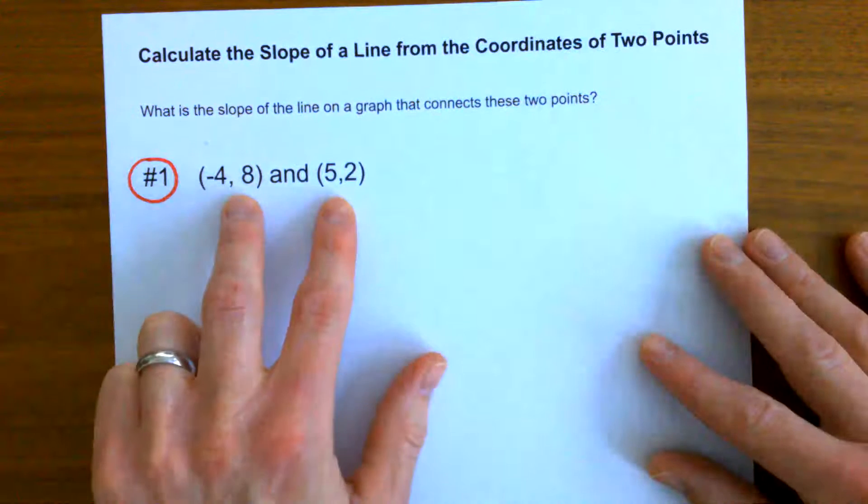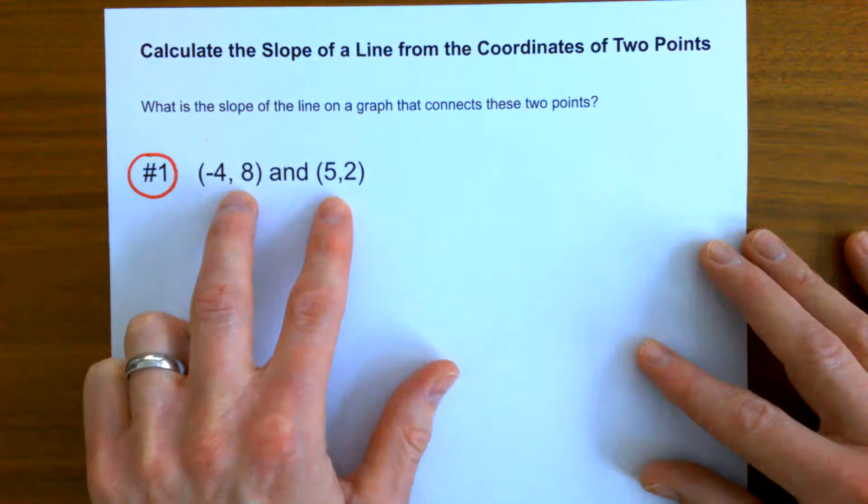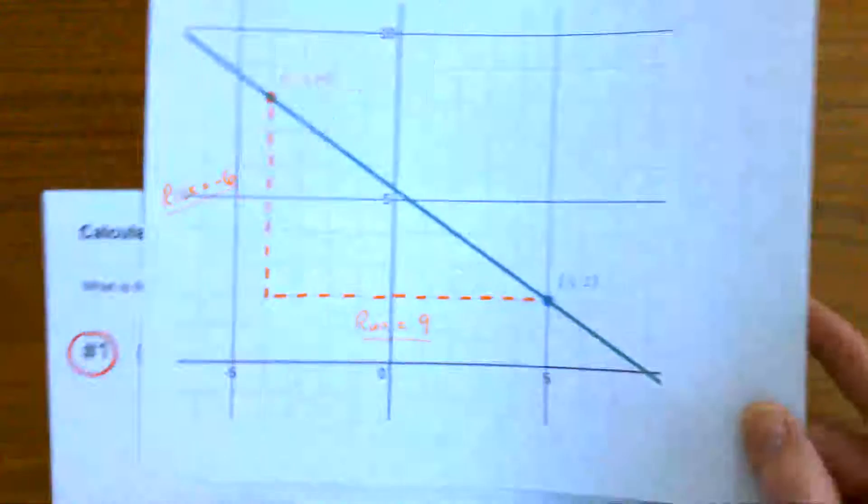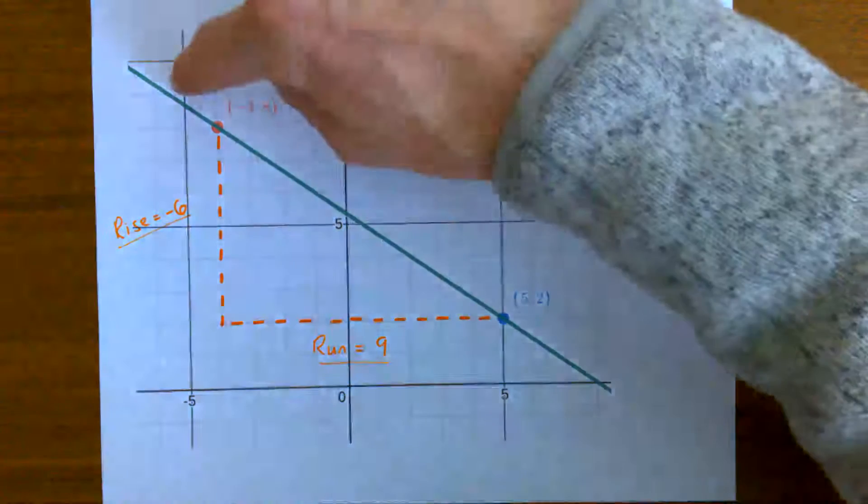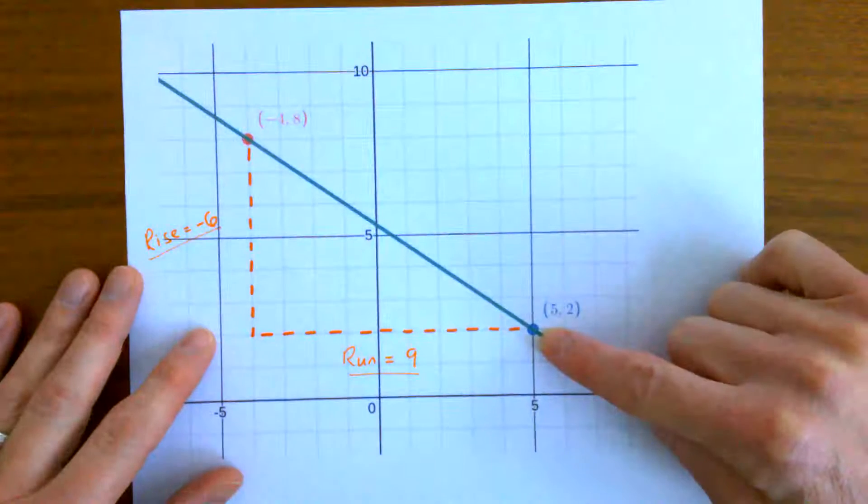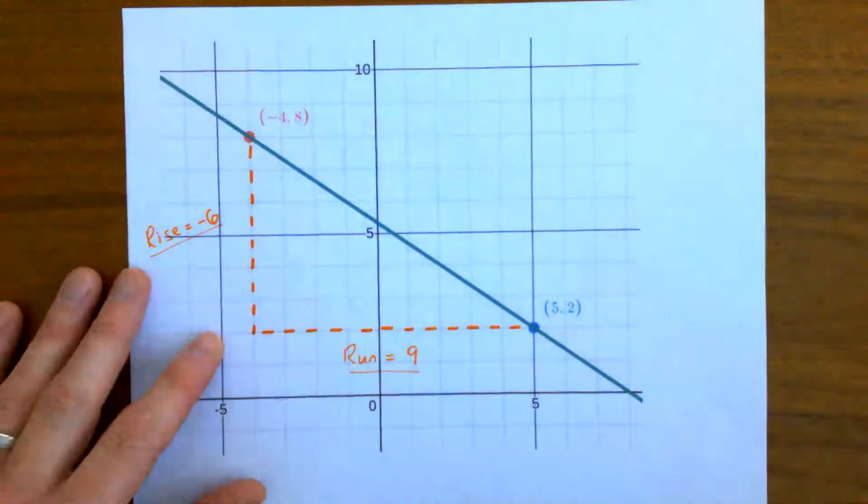And maybe the most obvious is if we have two points on a graph we could just plot those points on the graph, connect them with a straight line, and then we can see what the slope is.